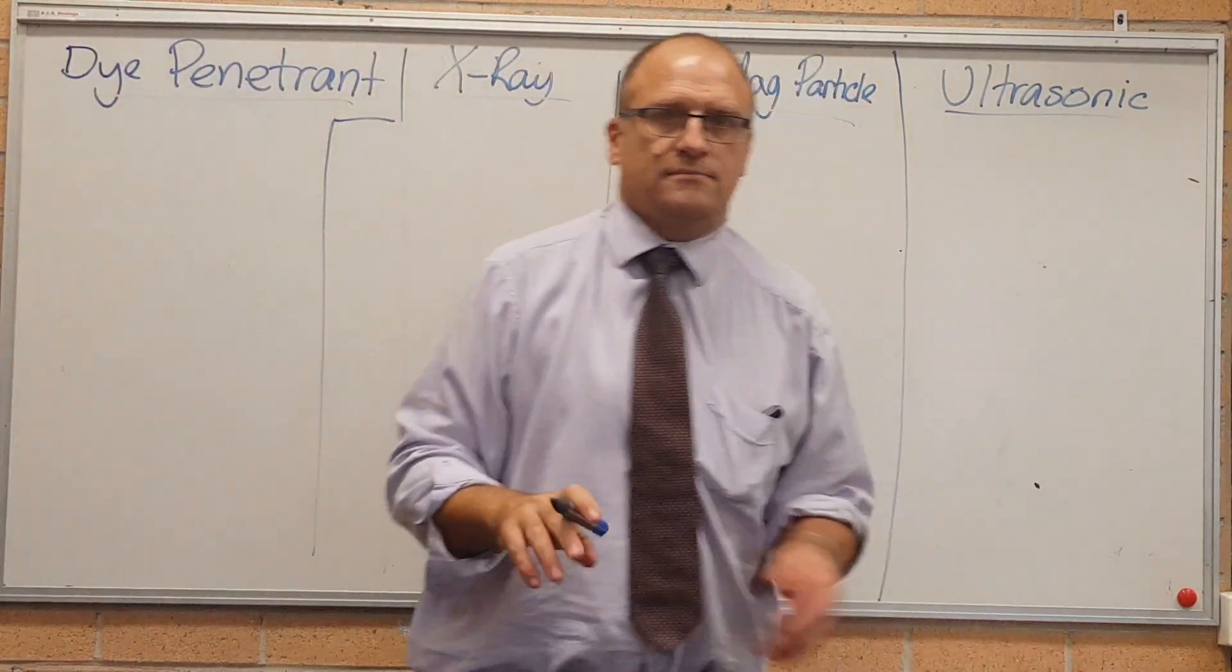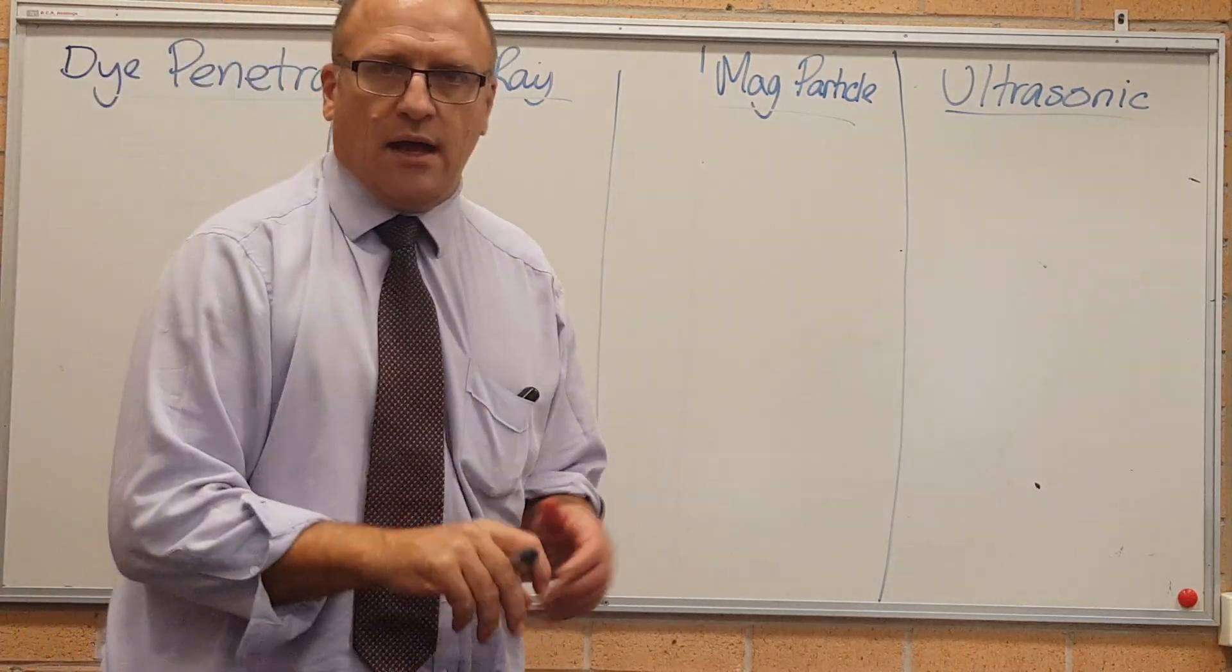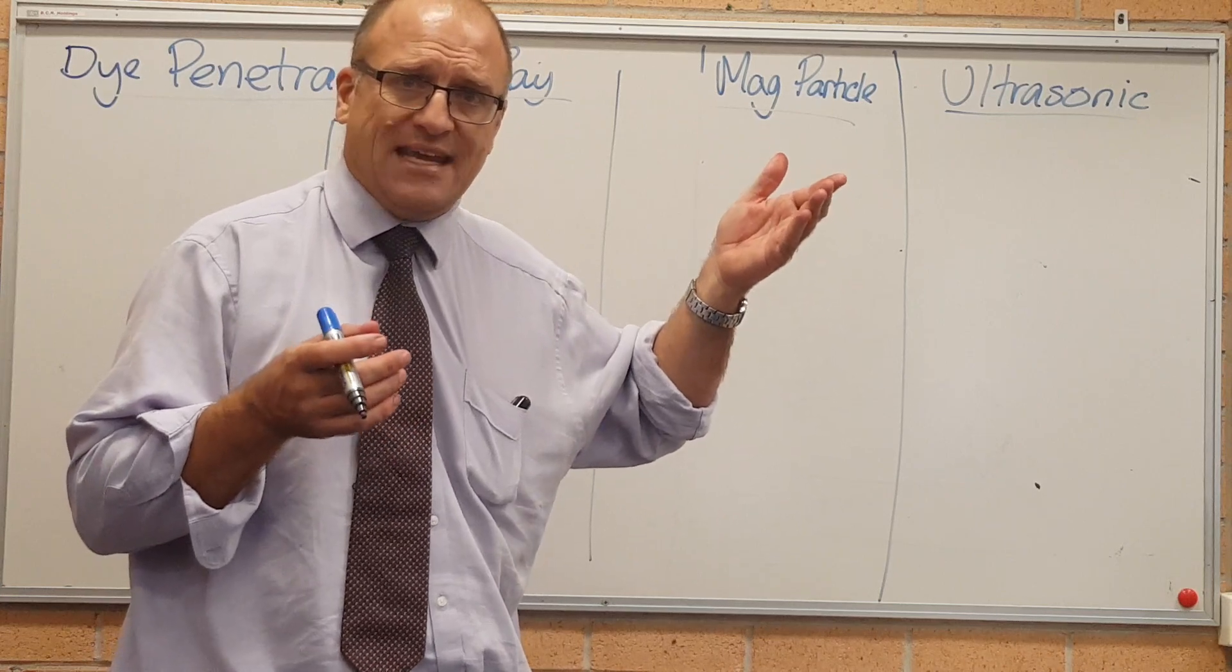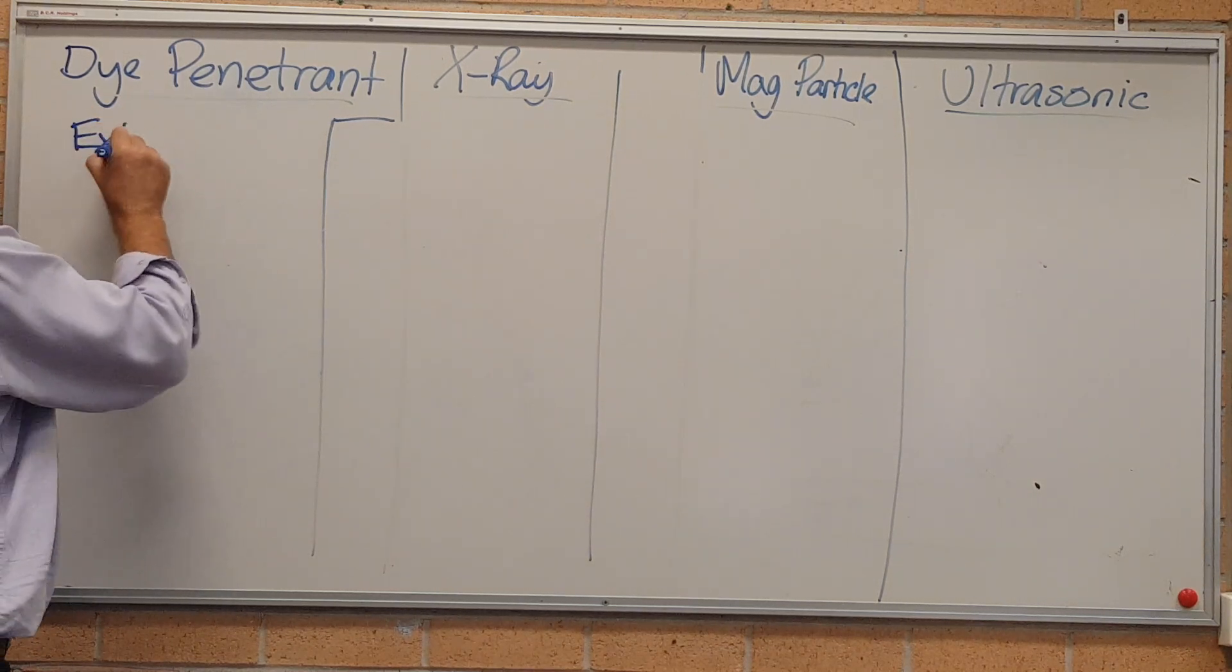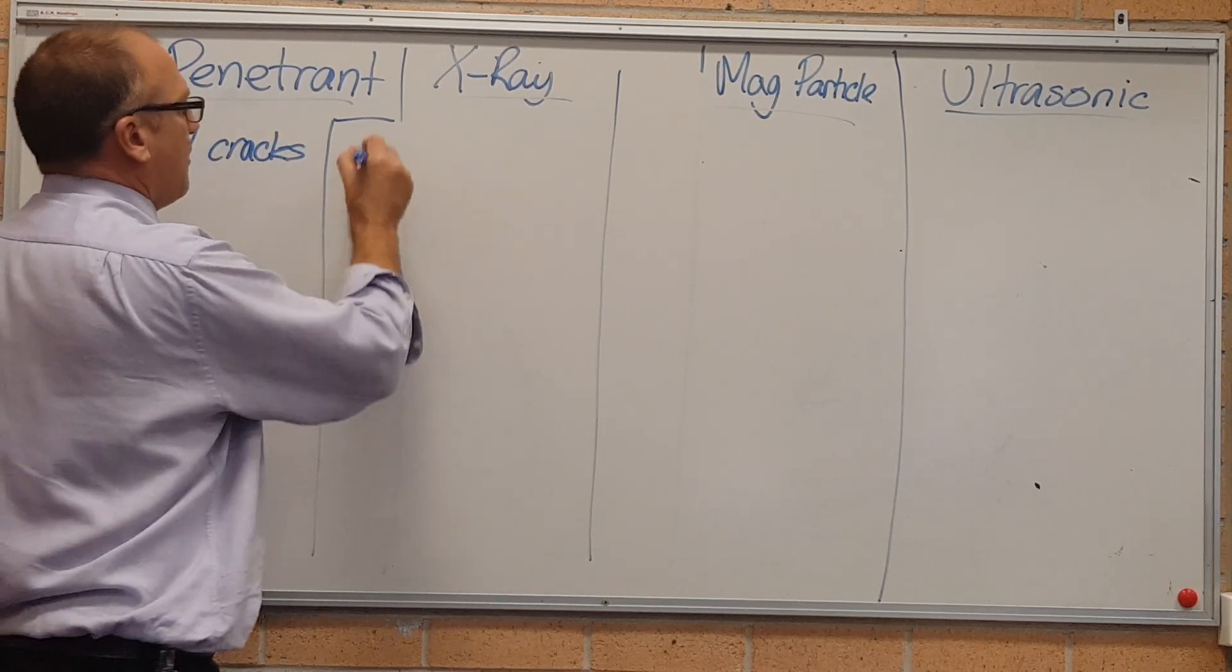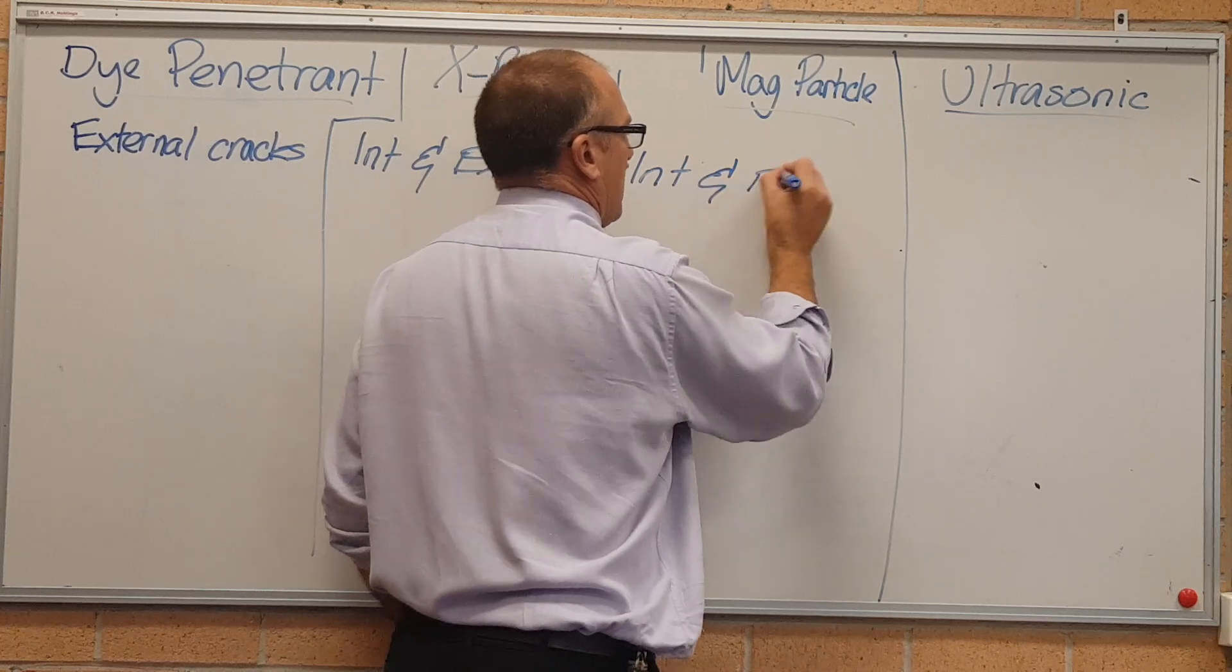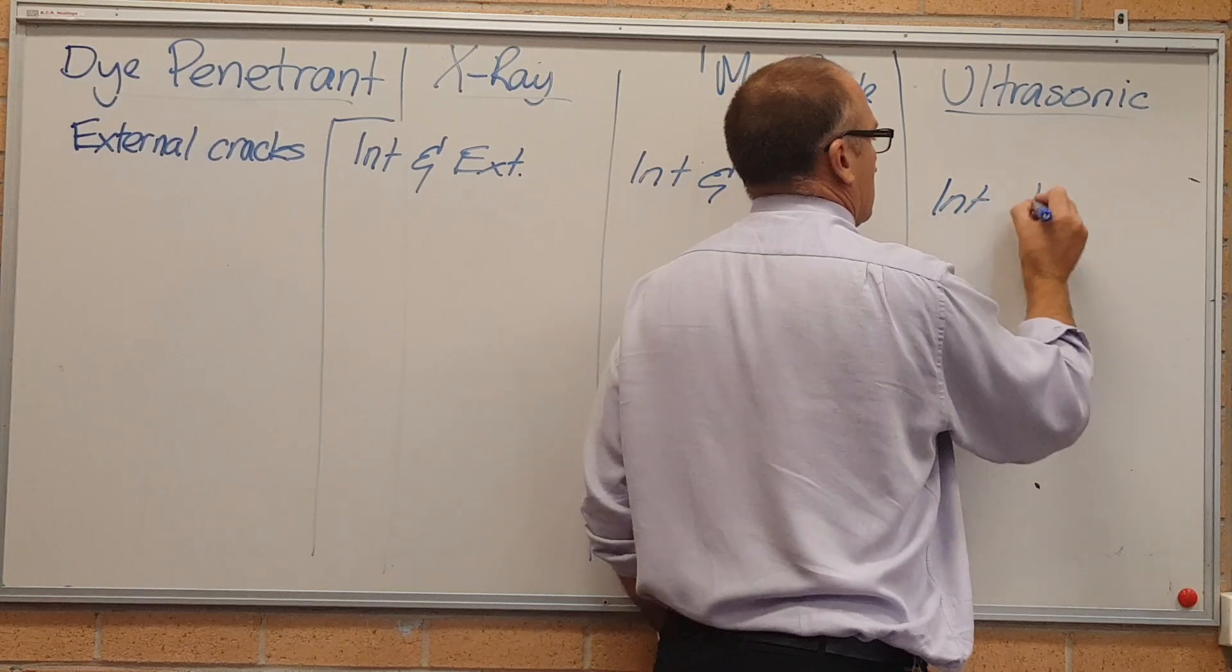So, dye penetrant. Cracks can be either external or internal. An external crack obviously penetrates out the surface of the metal. An internal crack is fully internal and does not come out the surface. Dye penetrant can only find external cracks. X-ray finds internal and external. Mag particle tests - internal and external. Ultrasonic - internal and external.